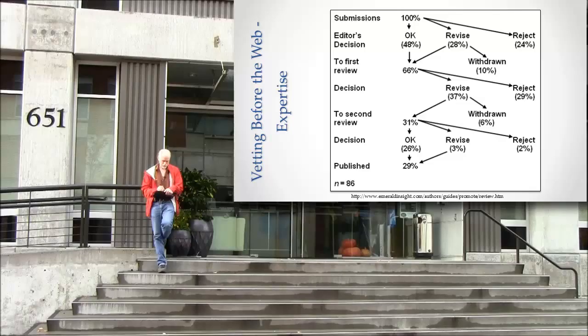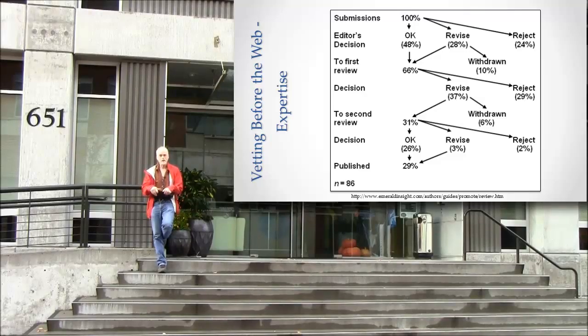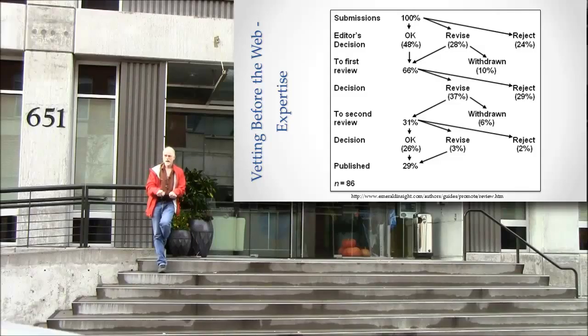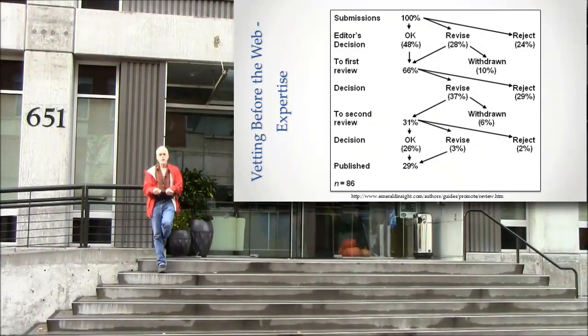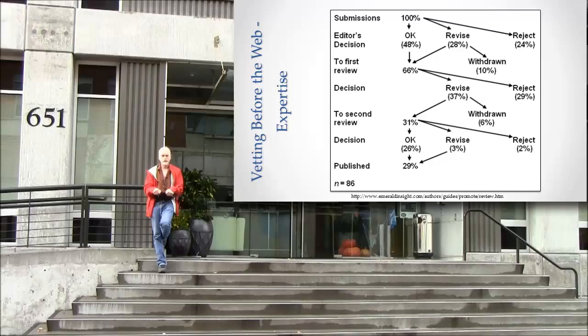Editor's decision—the editor is a person. First review—those reviewers are people. Decision—somebody, a person, makes a decision. Second review, people. Decision, second review, decision, people. It's all about people who are already considered to be authorities making a decision about whether this next thing should be produced.